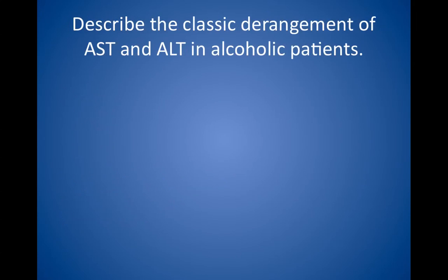Describe the classic derangement of AST and ALT in alcoholic hepatitis. The ratio of AST to ALT is at least 2 to 1, although both may be elevated. Other causes of hepatitis usually are associated with the opposite ratio or equal elevation of both AST and ALT.